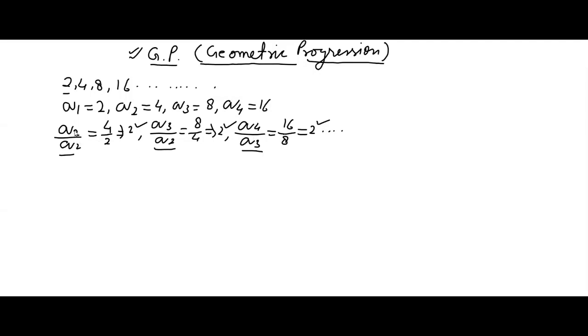The ratio of these 3 is true, means same, or you can say constant. This type of sequence is known as geometric progression, or you can say in short form GP.